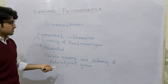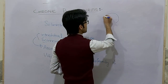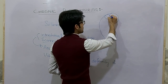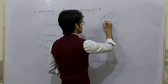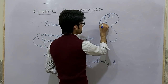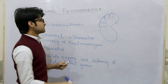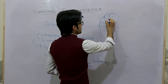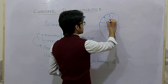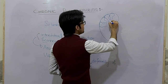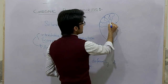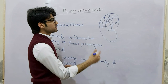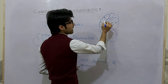A few words about the pelvic caliceal system: in the kidney we have renal pyramids. The renal papillae open into the major calyces, and these major calyces open into the pelvis. This whole system is called the pelvic caliceal system, which comprises the pelvis of the kidney and the minor and major calyces.